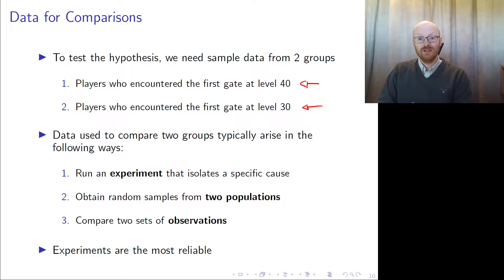The third way you can get data is just to compare two sets of observations. This is not an experiment and it's not random. There are a lot of problems with this third method—you might have or probably will have a lot of confounding variables. The best way to get a cause and effect is by using experiments.